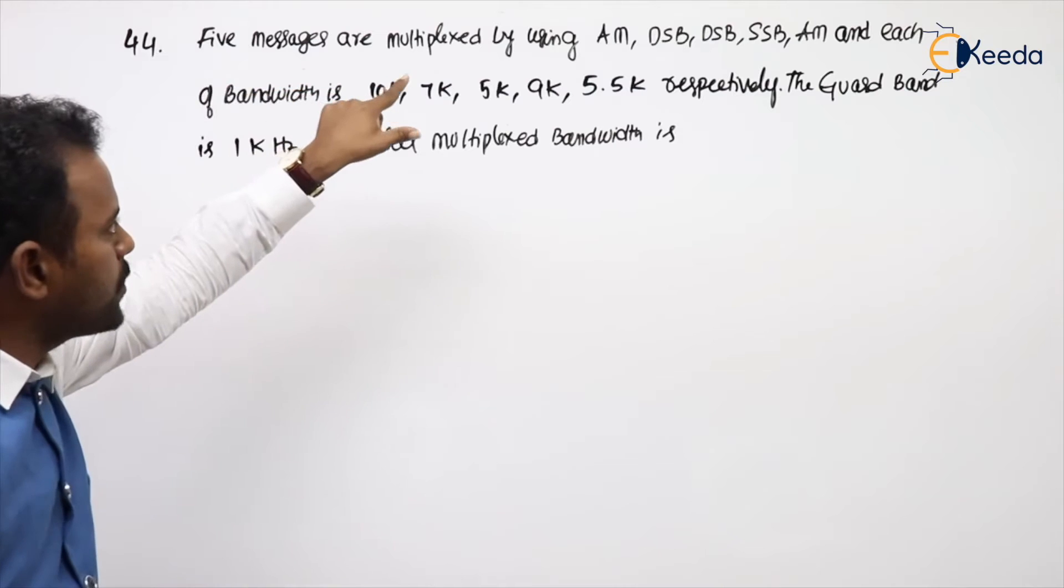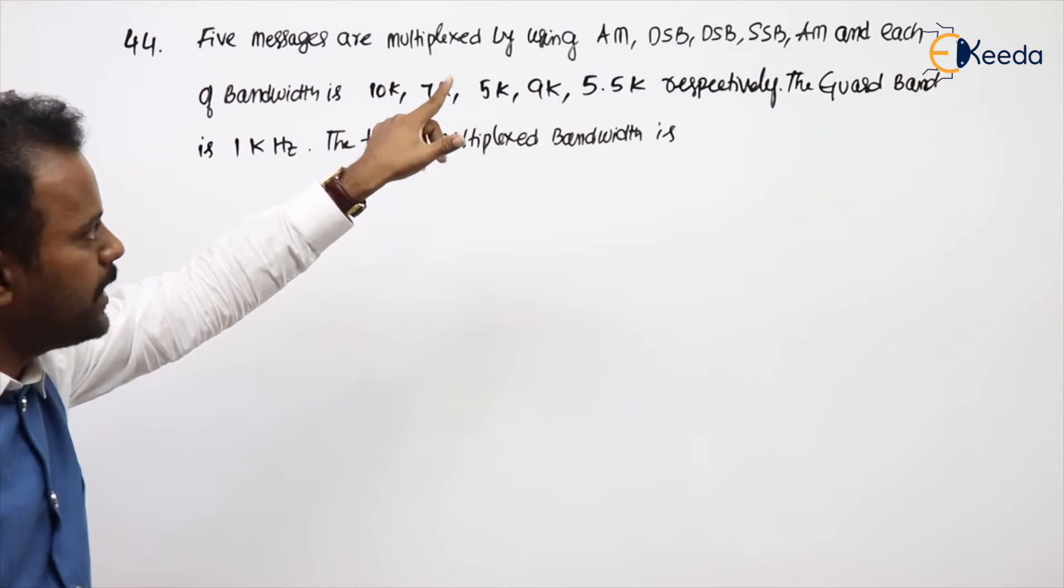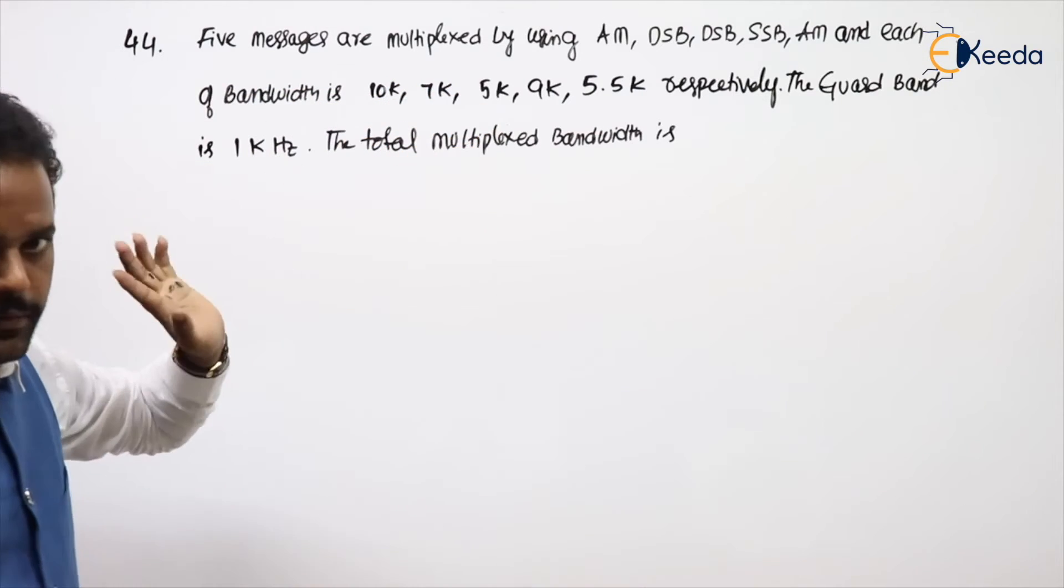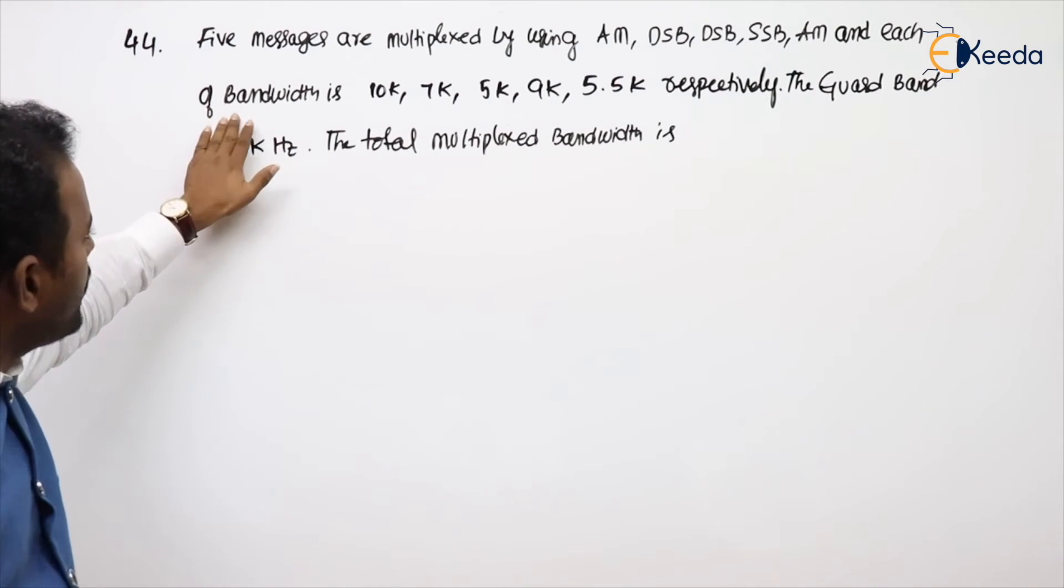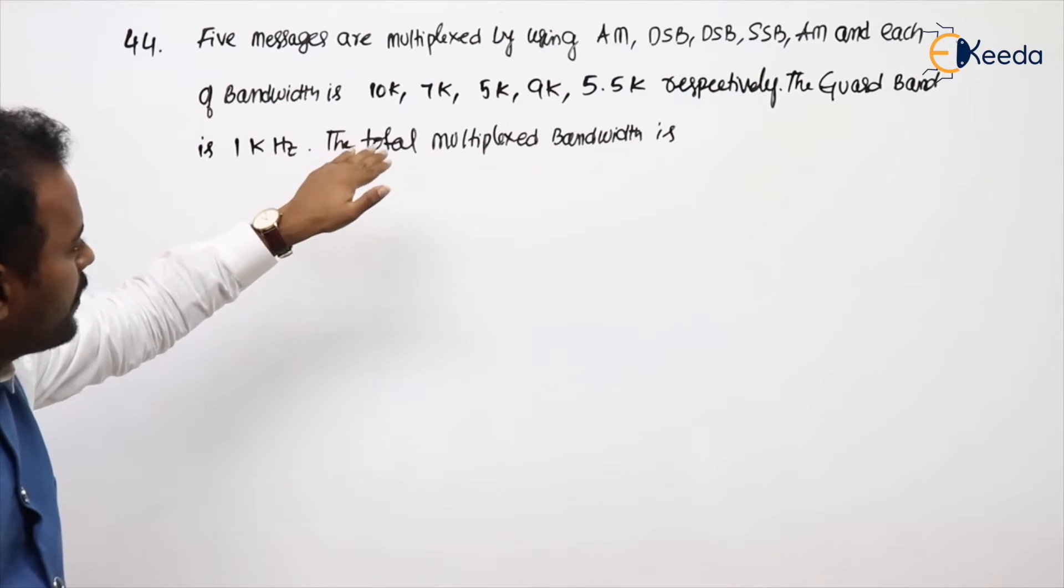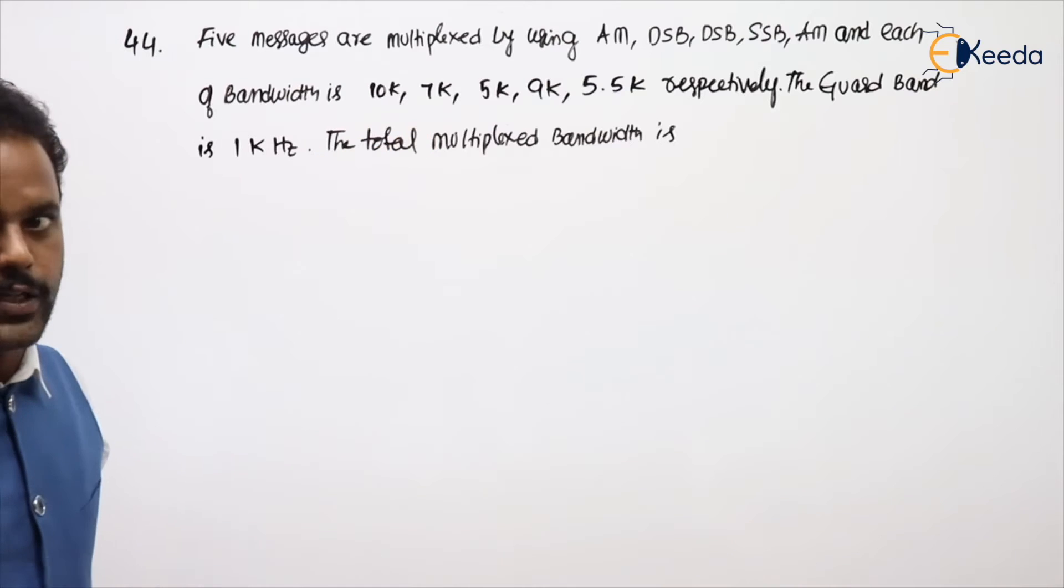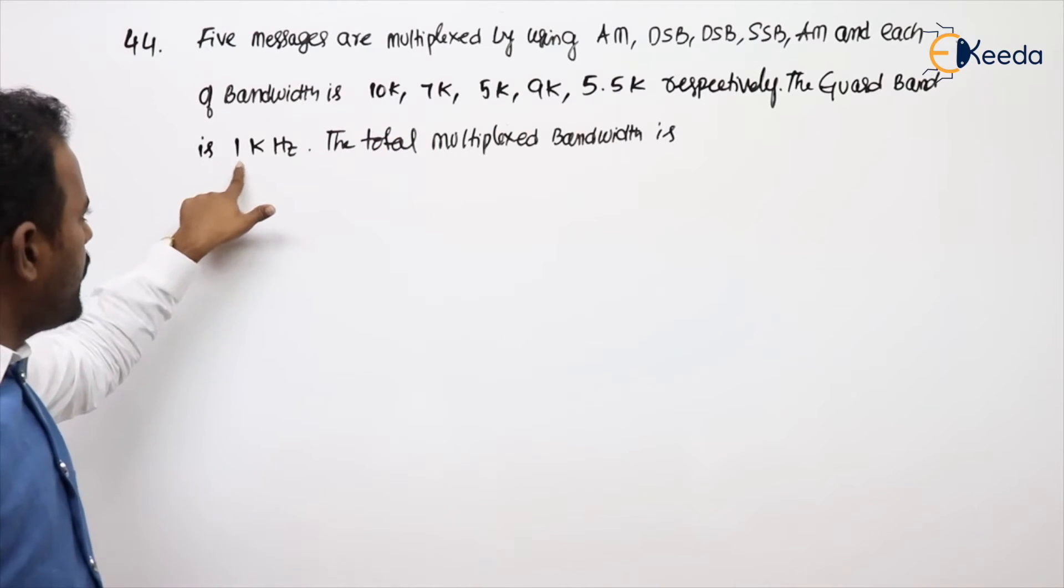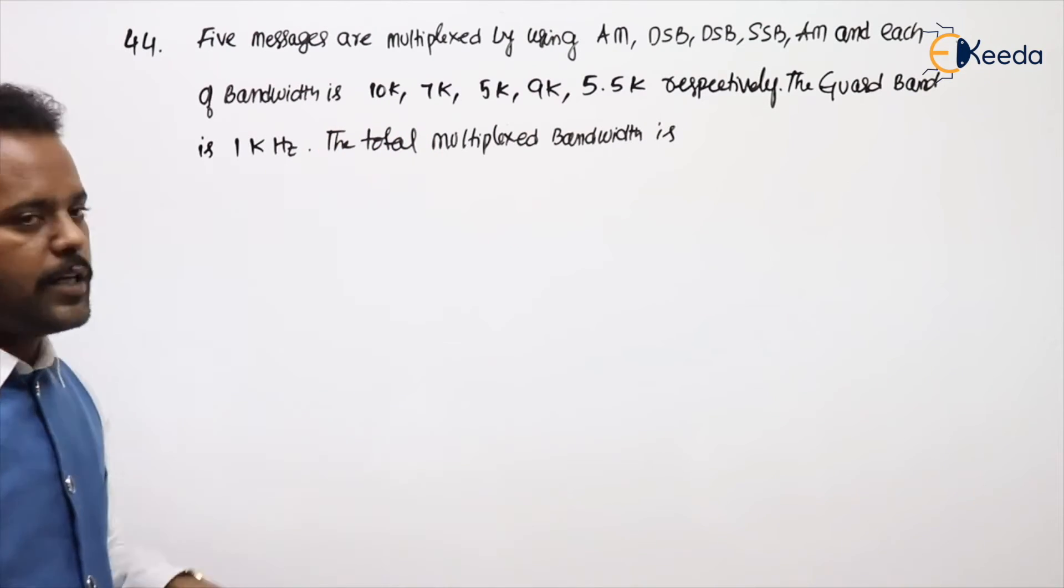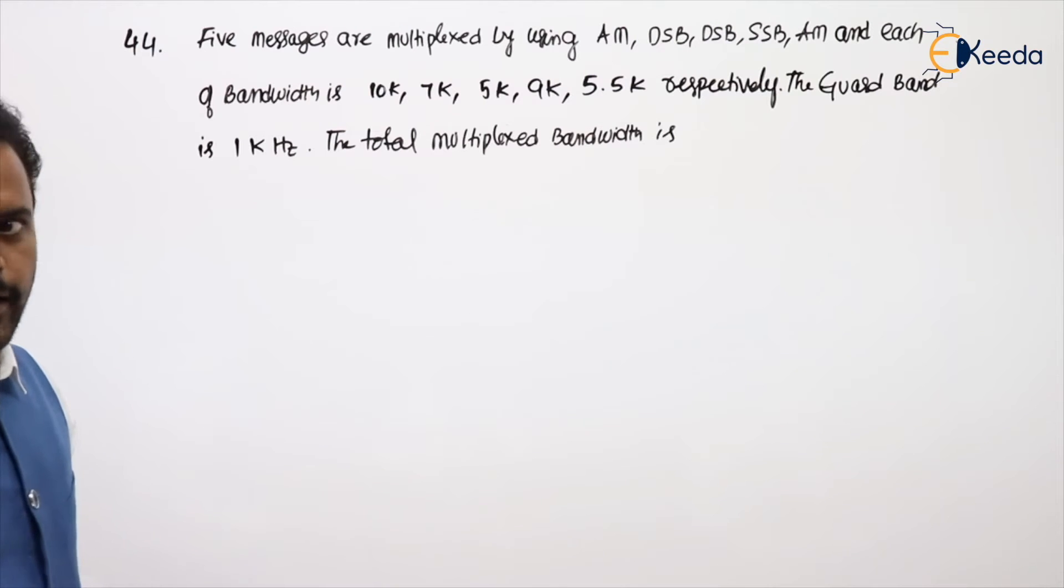See the next problem. 5 messages are multiplexed by using AM, DSB, DSB, SSB, and AM, each of bandwidth is 10K, 7K, 5K, 9K, 5.5K respectively. Guard band is 1K. Total multiplexed bandwidth is asking.